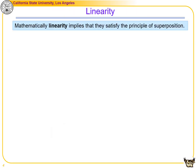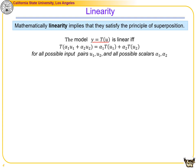Linearity mathematically implies satisfying the principle of superposition. For a model y equal to T of u, we say it is linear if and only if a linear combination of inputs results in the same linear combination of outputs. If input u1 gives output T(u1) and input u2 gives T(u2), then input alpha1·u1 + alpha2·u2 results in alpha1·T(u1) + alpha2·T(u2), valid for all input pairs and all scalars.